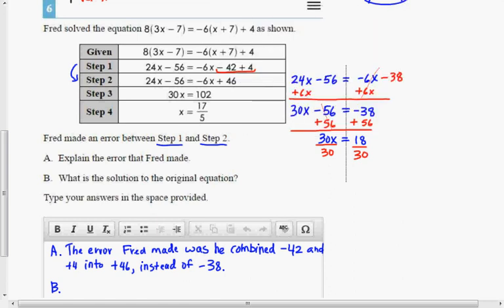So you can either list it as the decimal or a reduced fraction. I would say x equals 18 over 30. So basically the two ways you could probably say this, 18 over 30 reduces. Both of those are divisible by 6. So you could reduce 18 thirtieths to 3 fifths.